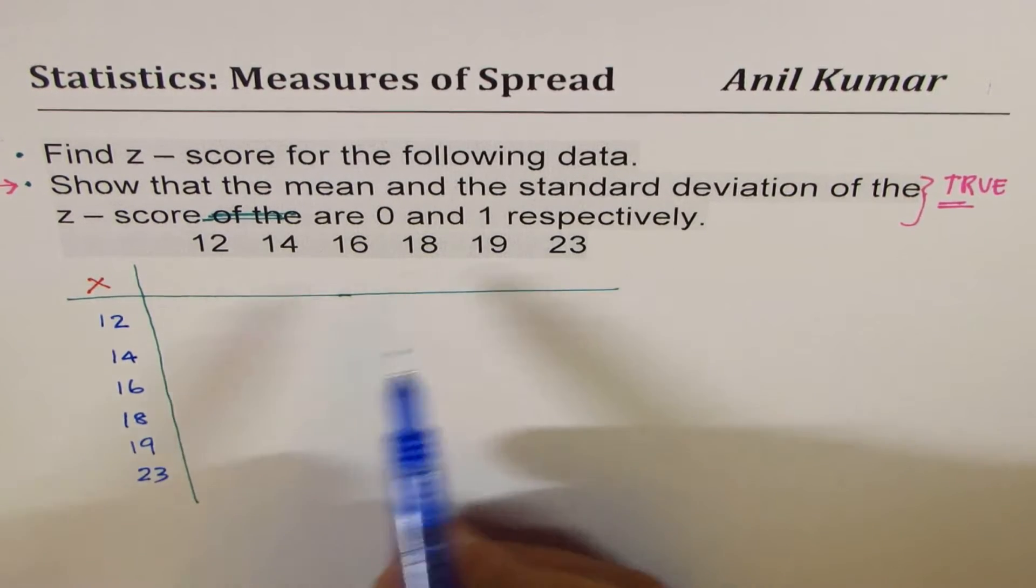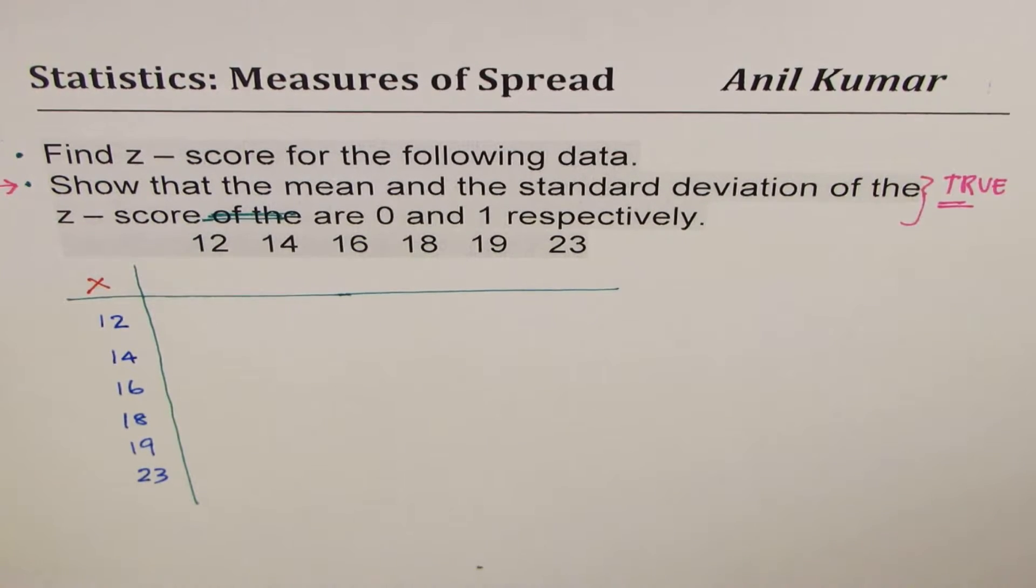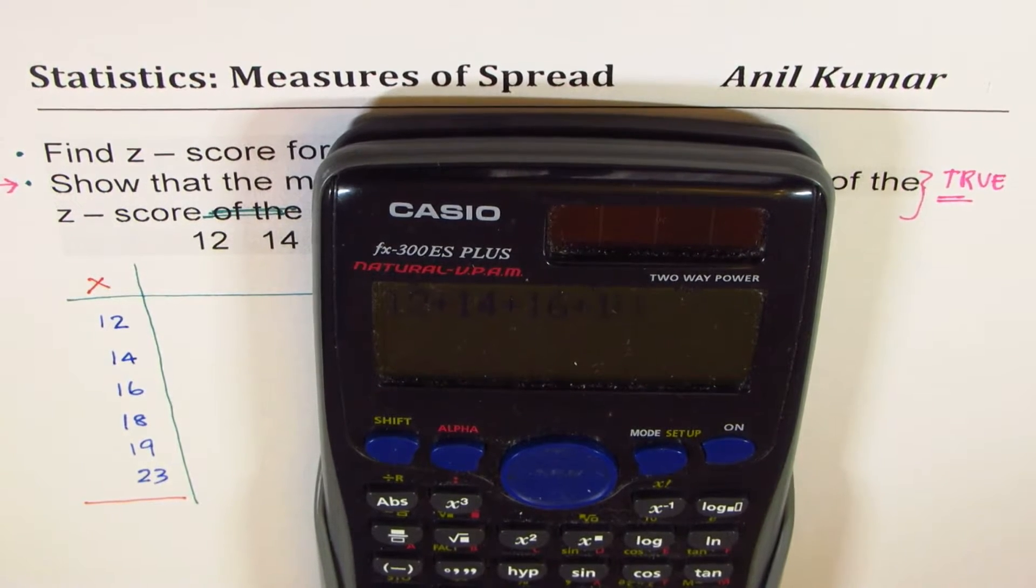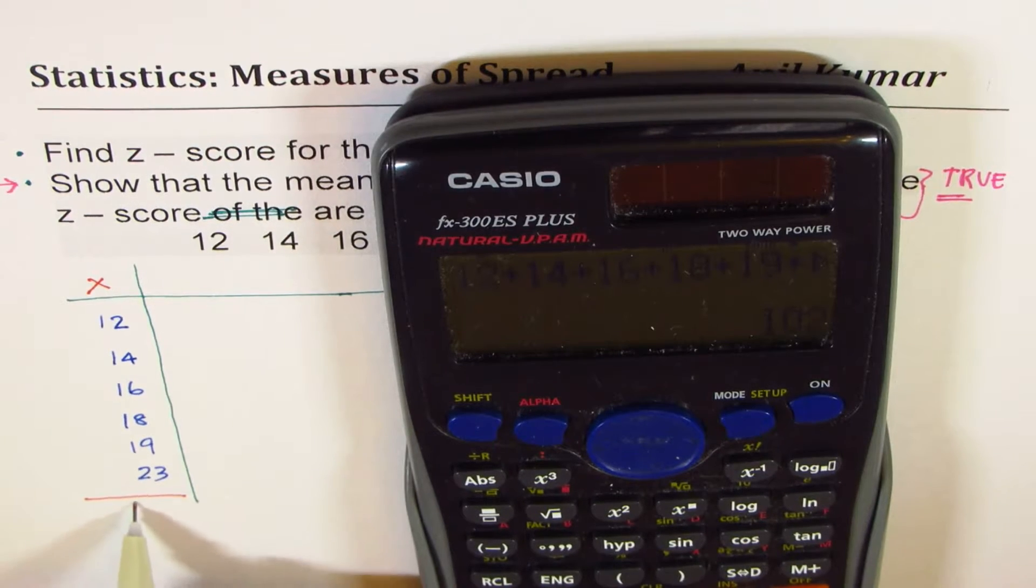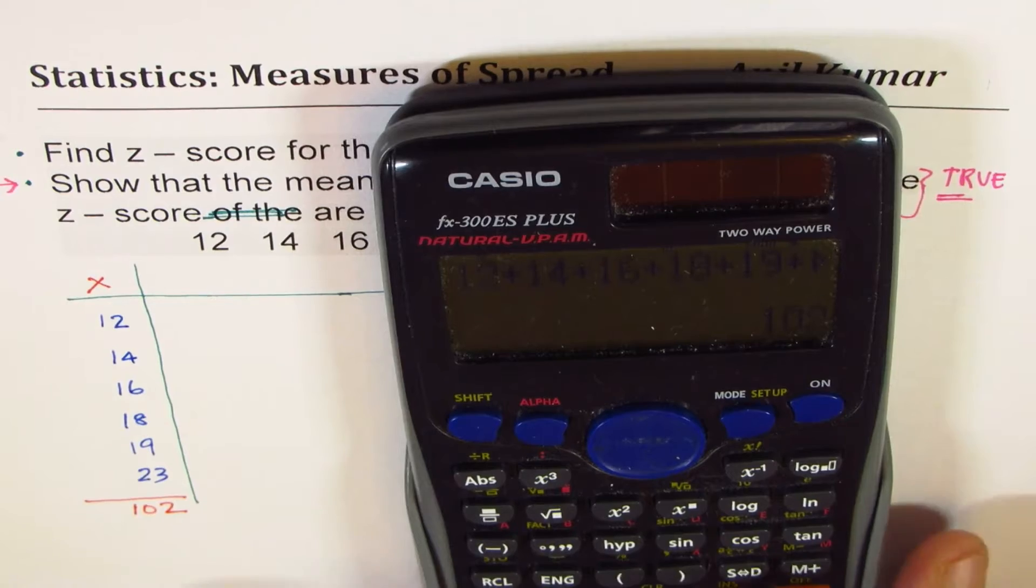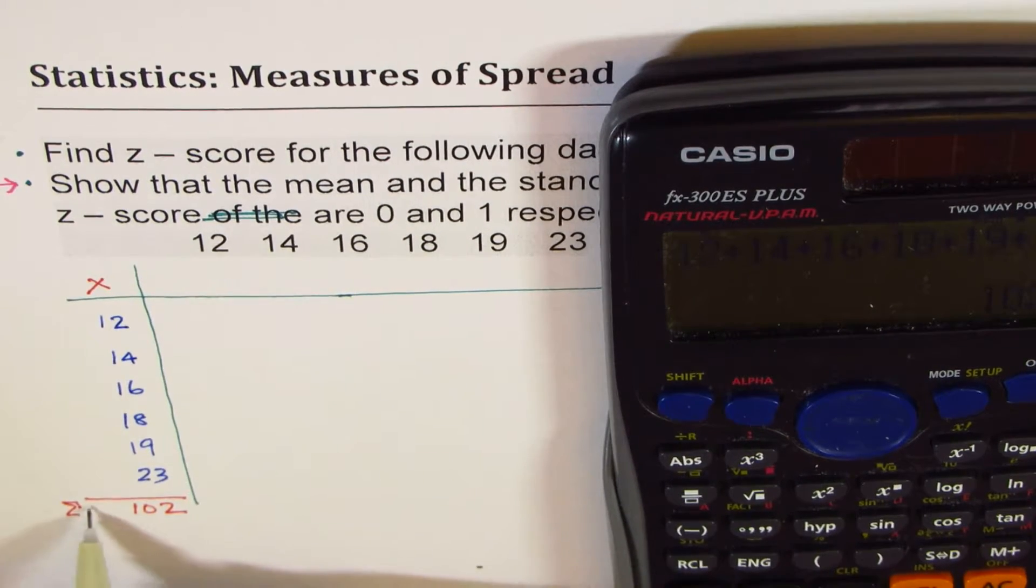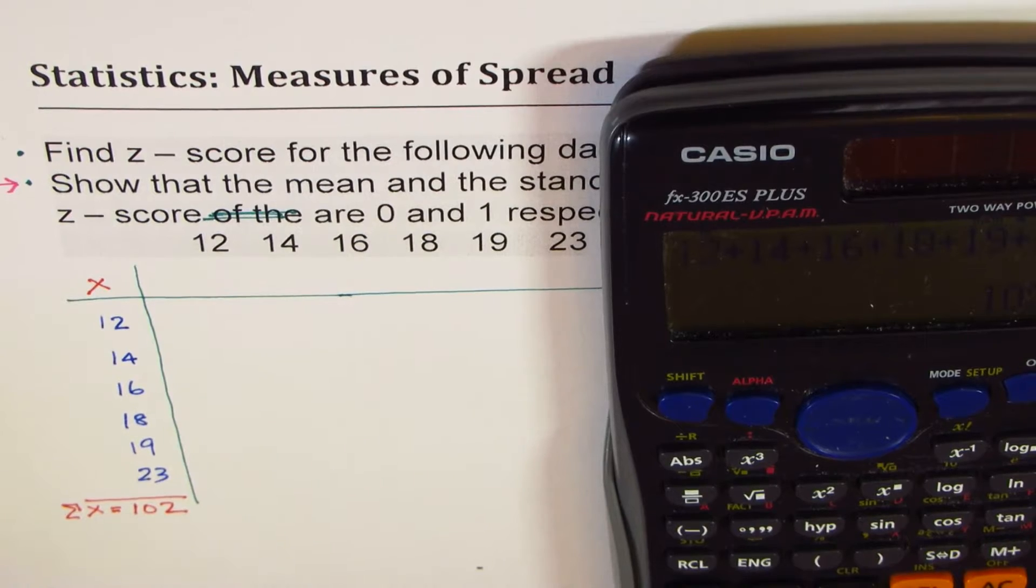Now to find the mean, we have to add them up. So what we have is 12 plus 14 plus 16 plus 18 plus 19 plus 23 equals to 102. That is sigma x.